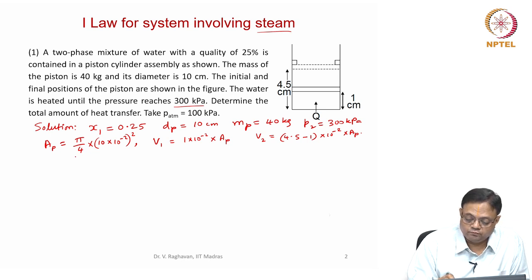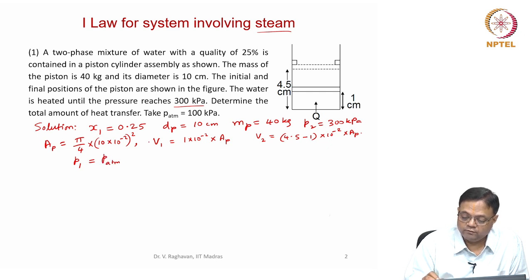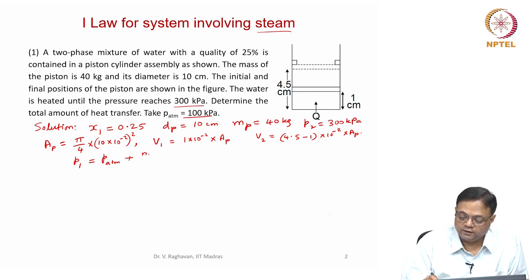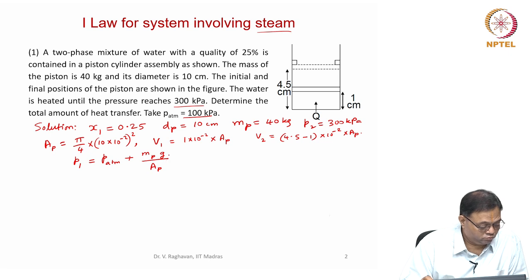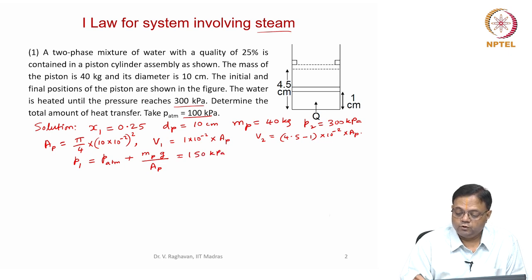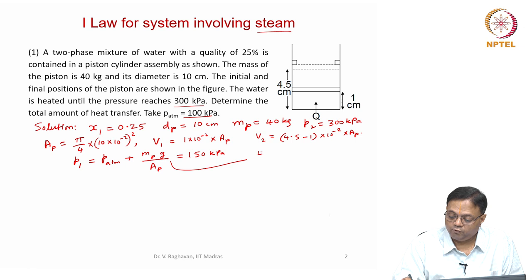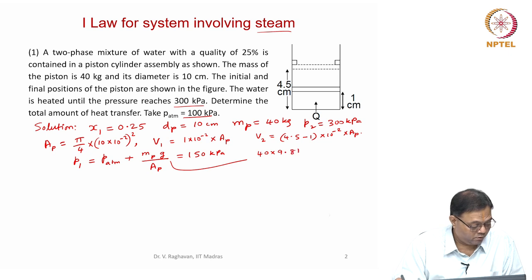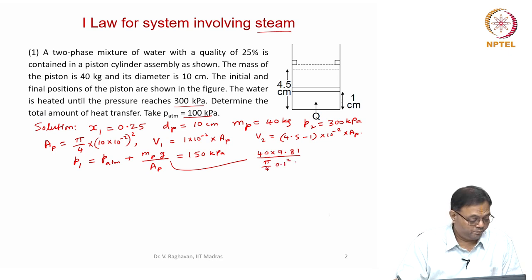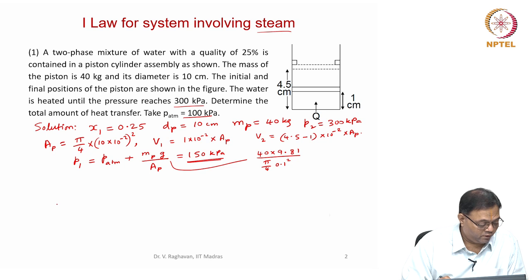Pressure at state 1 will be equal to atmospheric pressure, which is 100 kilopascals, plus the pressure imparted by the piston — that is mass of the piston times g divided by area. That is 40 × 9.81 divided by π/4 × (0.1)², which gives the initial pressure as 150 kilopascals.